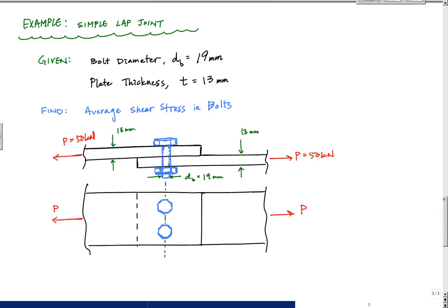So here's my schematic. I've got 50 kN of load being applied through the centroid of each of the plates and I want to know what the shear stress is in each of these bolts.